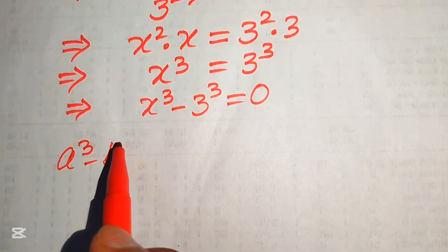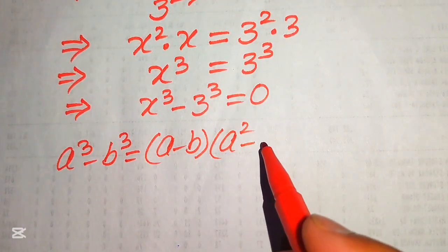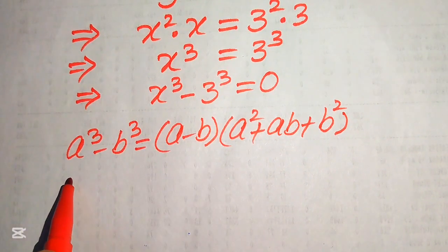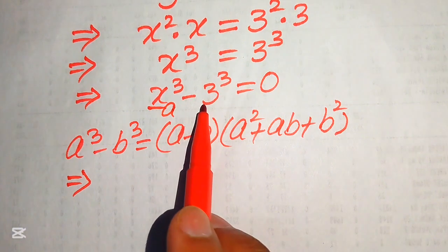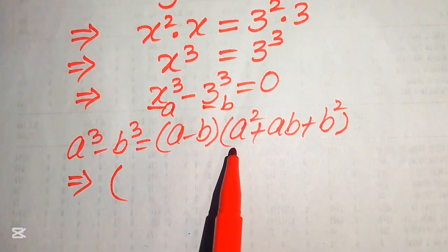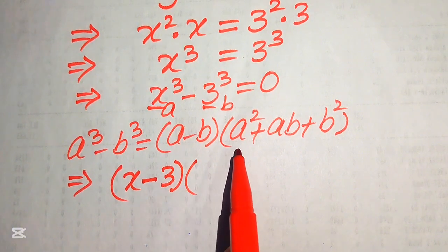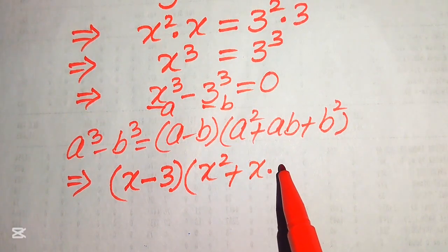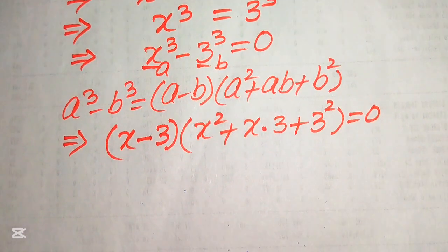We know that a³ minus b³ equals (a minus b) times (a² plus ab plus b²). Applying this formula to our equation, where a is x and b is 3, we write it as (x minus 3) times (x² plus x·3 plus 3²) equals 0.